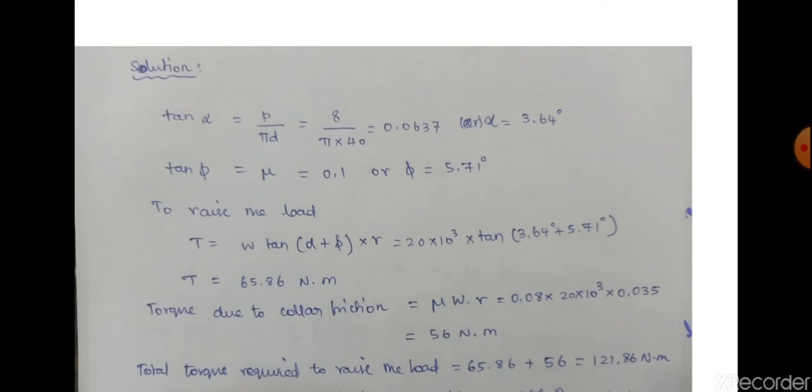Now we will get the torque due to collar friction. The formula for collar friction torque is mu times W times R, which equals 0.08 times W times R. The friction torque is 56 Nm.